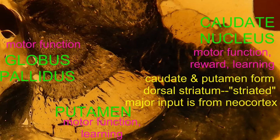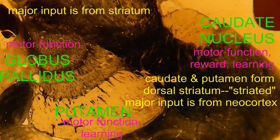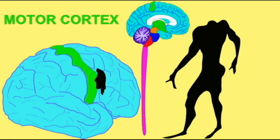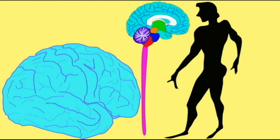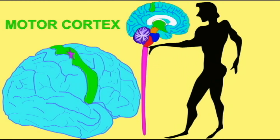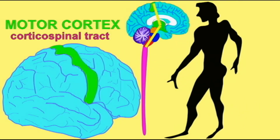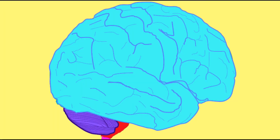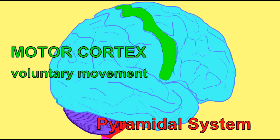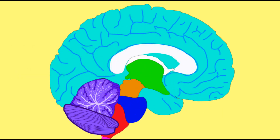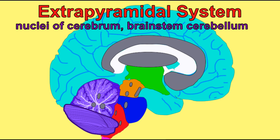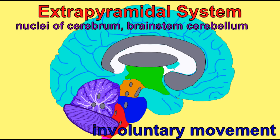This dorsal striatum has its major input from the neocortex, and the globus pallidus has its major input from the striatum and functions in motor function. When we think of skeletal muscle, we often think of the voluntary control mediated through the corticospinal tract coming from the motor cortex of the cerebrum and going through these triangular ridges known as pyramids in the medulla. But we also have involuntary control of skeletal muscle, and these pathways are known as extrapyramidal pathways, and their nuclei in the brain as the extrapyramidal system, because they do not travel through those pyramids in the medulla.